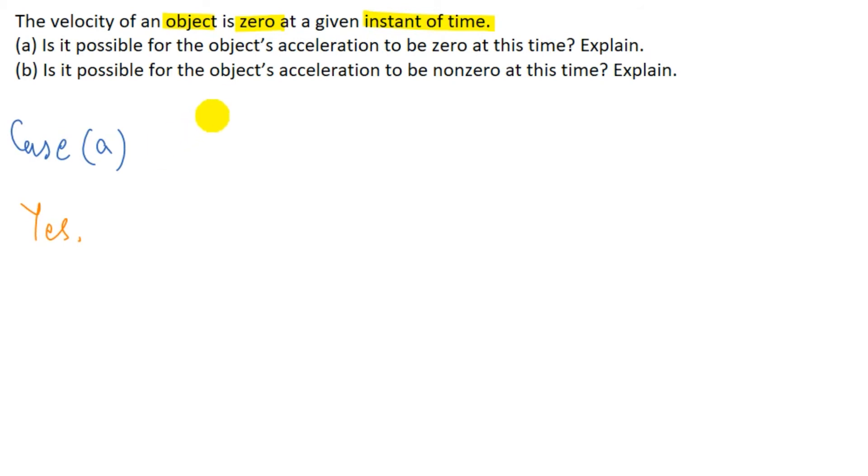Now next we have case B. Now in the case B they are asking is it possible for the object's acceleration to be non-zero at this time? So let us take an example here. Now suppose you throw this ball in the upward direction. And the velocity at the top of its trajectory is zero. But the acceleration is downward with a magnitude of 9.81 meter per second squared. So yes it is also possible that velocity is zero for a given instant of time but acceleration is non-zero.